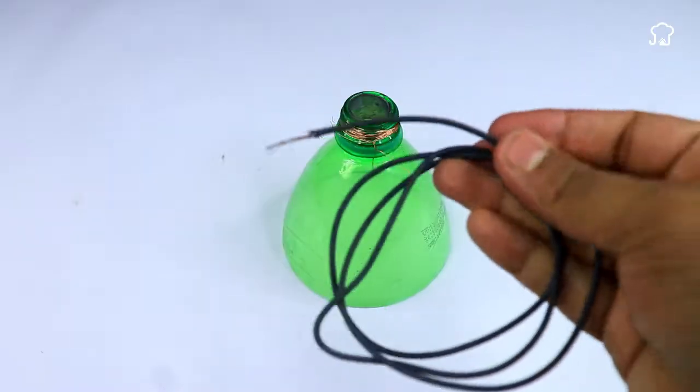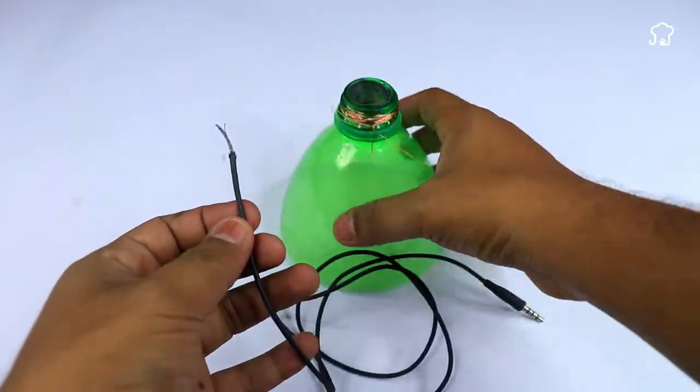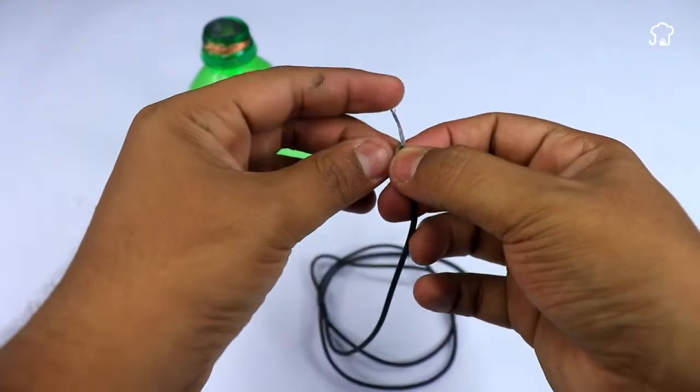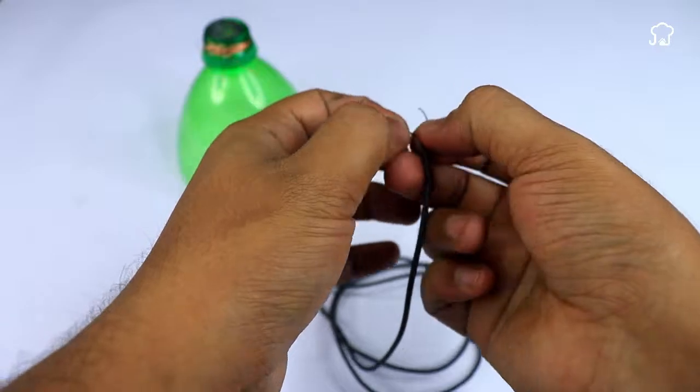Take the unused headphones and remove the headphones themselves, the earphones. Next, divide the cable of the headphones in two, separating the conductors.